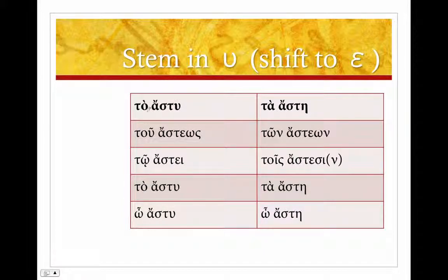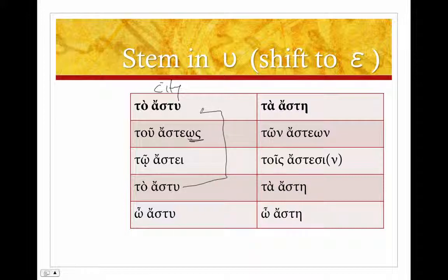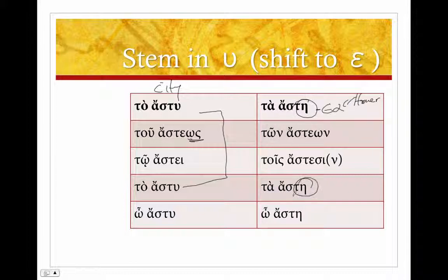Then we have neuters, which follow the expected rules. 'To aste' is another word for city. 'Aste', 'asteos' — quantitative metathesis again — 'astei', 'aste'. Nominative and accusative are always the same in neuters. 'Aste' for the vocative. In the plural: 'astea' — a contraction of 'astea', which you will actually see in Homer as the uncontracted form — then 'asteon', 'astesi', 'astea', 'astea'. In the neuters there's really only one contraction to worry about.